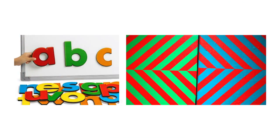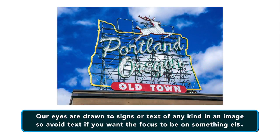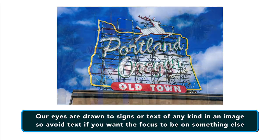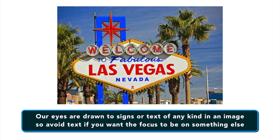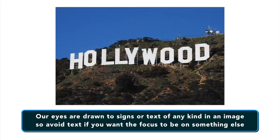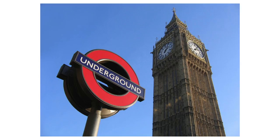Next thing to consider is text. As literate beings, we look for and try to make sense out of letters and patterns. Our eyes are drawn to signs or text of any kind in an image. Being aware of this can help you remember to avoid text if you really want focus to be on something else. Otherwise, that's the first thing people are going to focus on after faces.